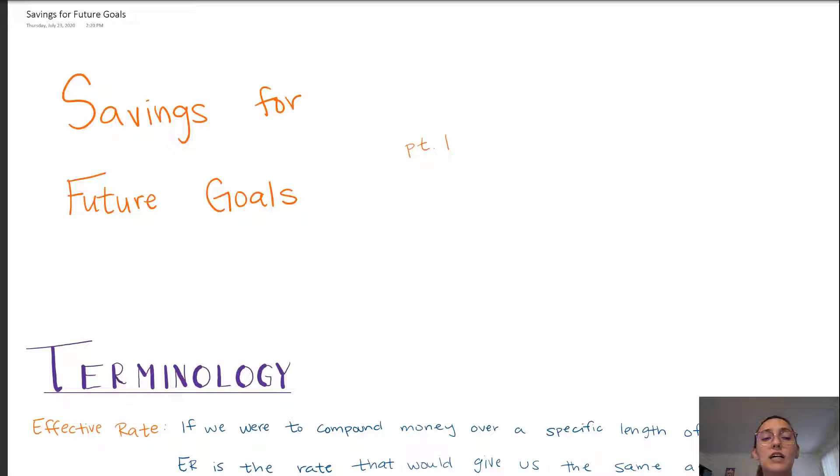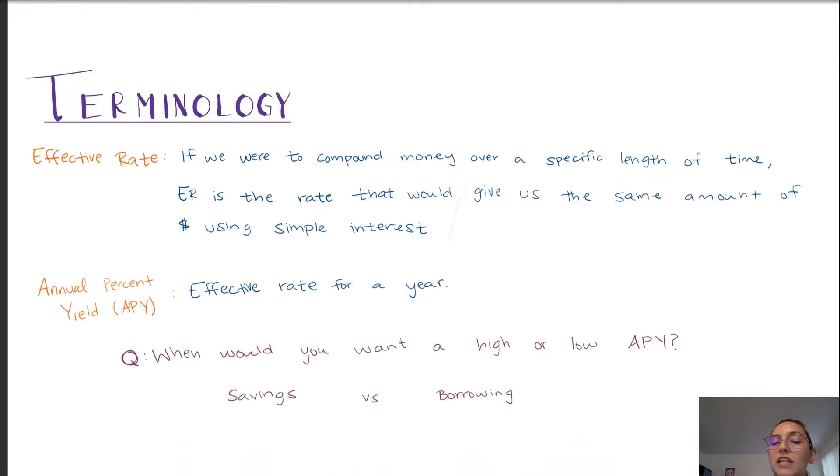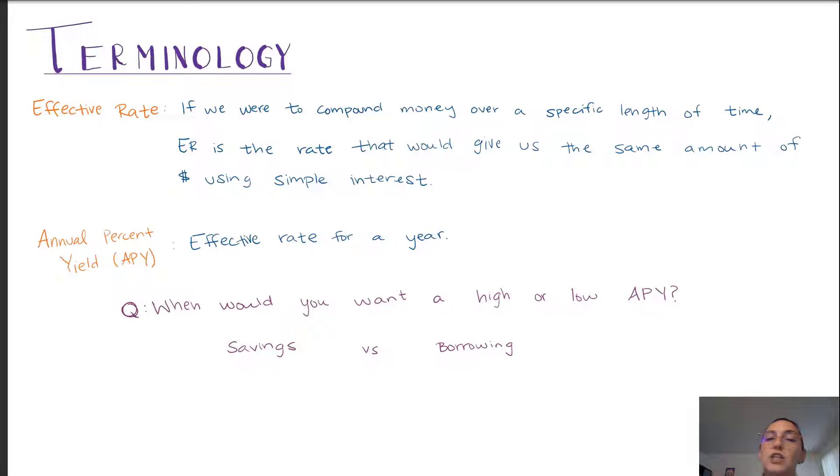Before we get into the driving rule for savings, we first need to talk about effective rate. Understanding effective rate will allow us to come up with our savings rule.